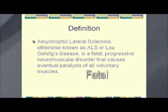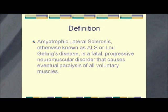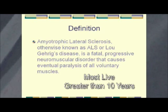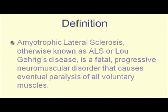We consider it fatal because the average life expectancy after diagnosis is two to five years. About 10% of all people with ALS live greater than 10 years, but most people die within the two to five year range. The word progressive is important because ALS usually starts in a limb — an arm or leg — and eventually the person will not be able to move any voluntary muscles, will not be able to speak, chew, swallow, or breathe on their own, because all of these muscles become affected by ALS.